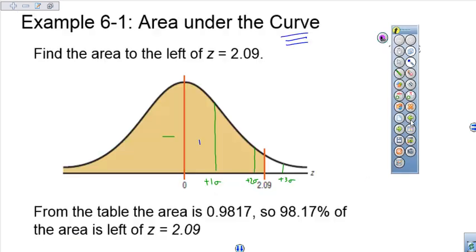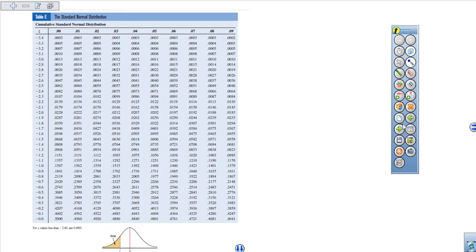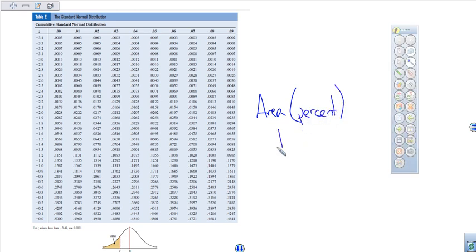Now, the key thing to remember here is that when we're looking at our table E, our table E only shows us the area or the percent to the left. So these numbers inside of here are the area or the percent to the left of a given z-score.